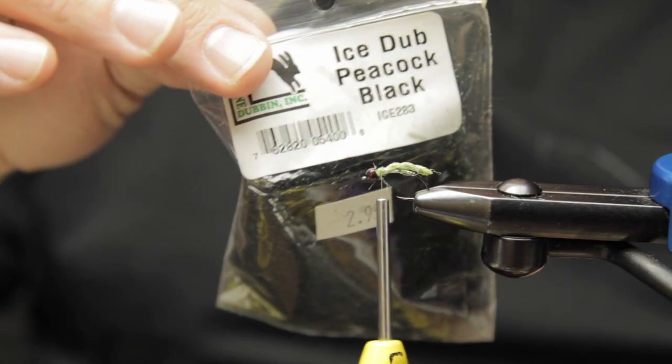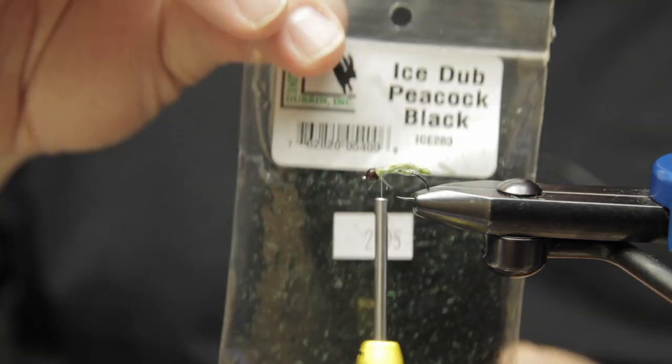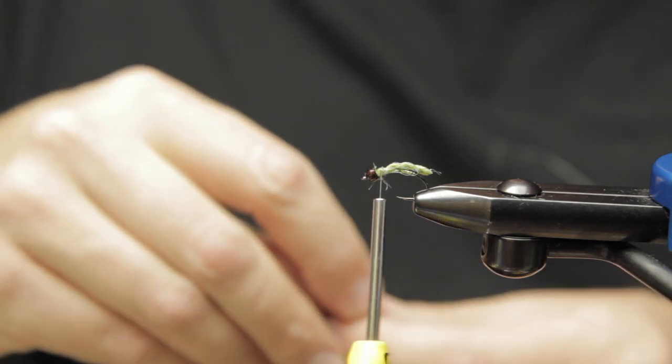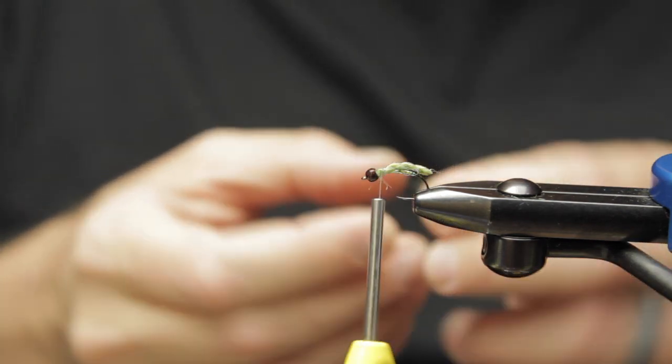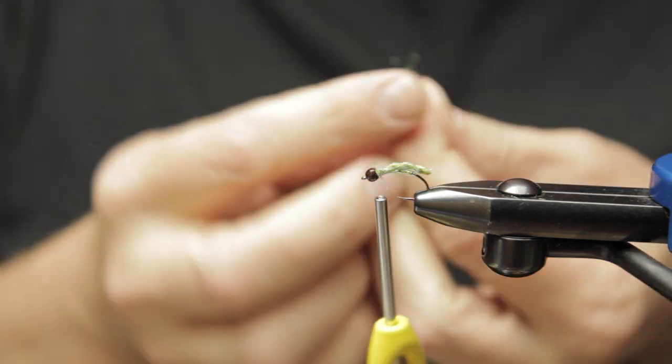This is a bigger size, like a size 10, so this is going to be like your Hydropsyche and other big bugs, first generation bugs. They get smaller as the year progresses, so good runoff fly.